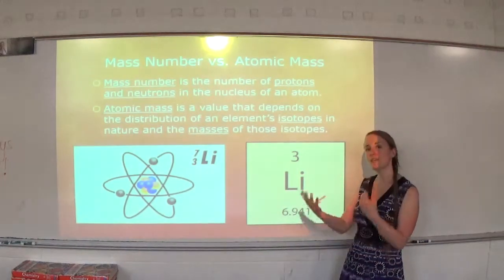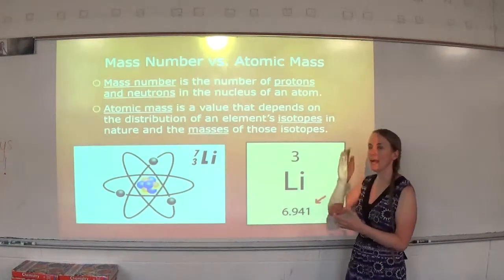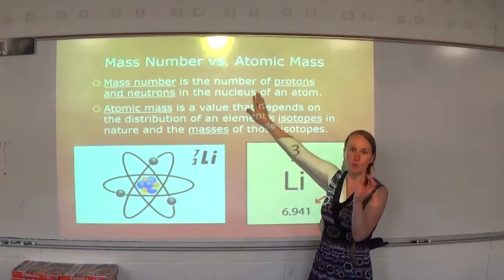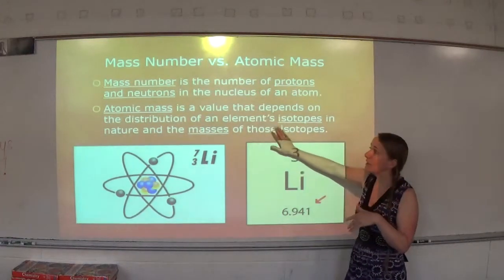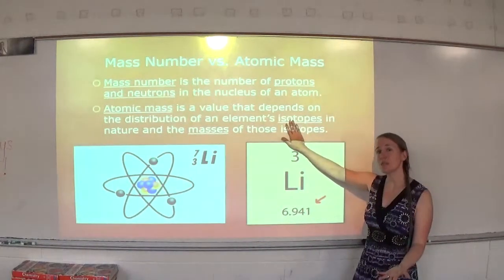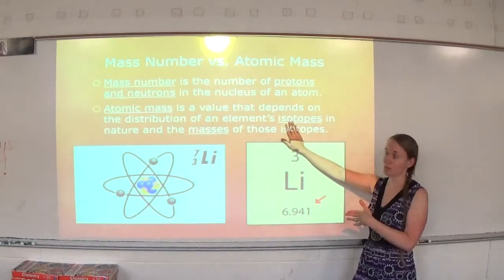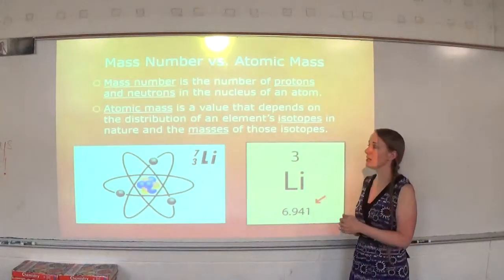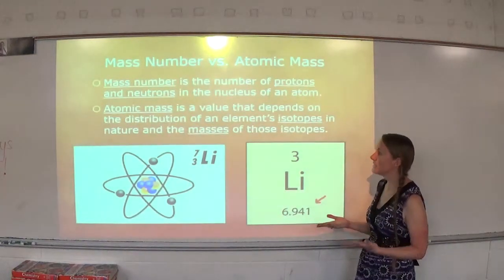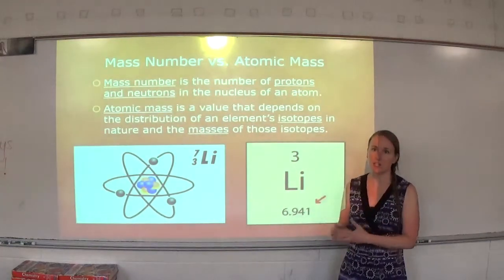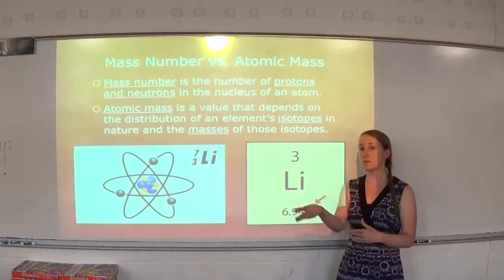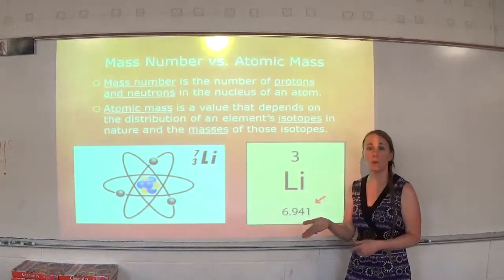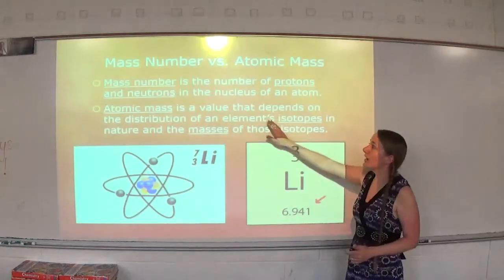Think about your grades — when you go on Infinite Campus and it averages them for you, you'll see something like 84.17 and also 84. So 84 is like the mass number, it's that whole number, but 84.17 is the more accurate value with decimal places. The decimal places come from an average of the isotopes. It depends on two things: the masses of the isotope and the distribution, which we call natural abundance — like what percentage of lithium is lithium-7 versus lithium-6. Test grades count more than daily grades — they're not weighted the same — and isotopes have that same thing occur.